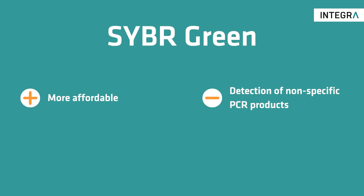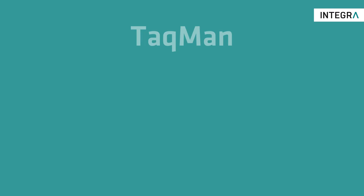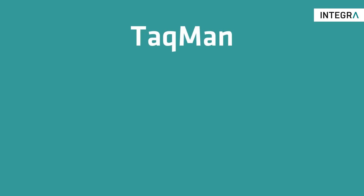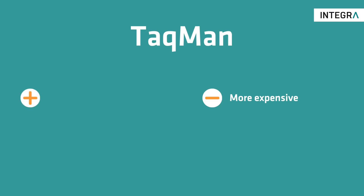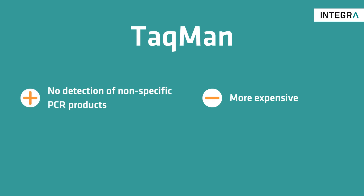Compared to the SYBR Green assay, the use of TaqMan probes is more expensive, but also offers two significant advantages. The first is that TaqMan only measures amplification progression of the target sequence, as the probes are target-specific.